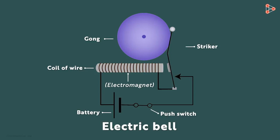But notice what happens when the striker hits the gong? As soon as the soft iron is shifted away from its original spot, the circuit breaks. It no longer connects this wire with the terminal of the battery.